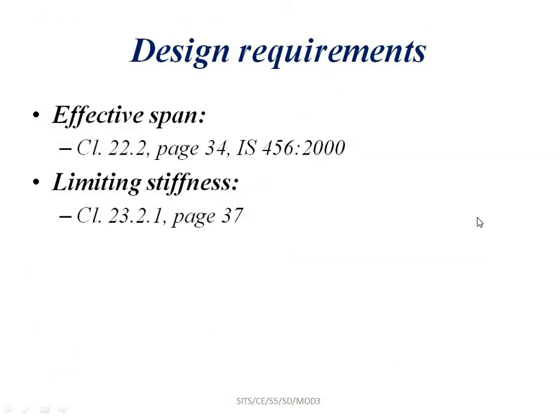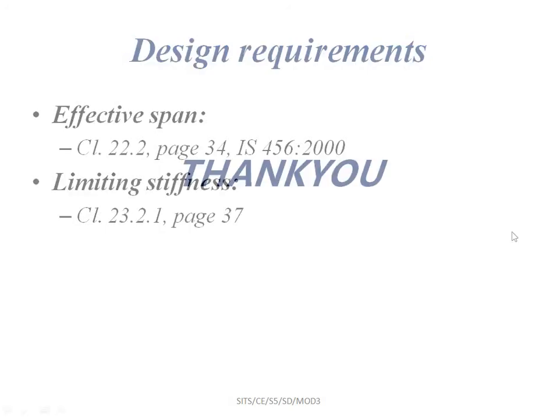These are the design requirements from IS code. We refer to clause 22.2 on page 34 for effective span and limiting stiffness, and clause 23.2.1 on page 37. These clauses are used for the design procedure of both one-way slab and two-way slab.